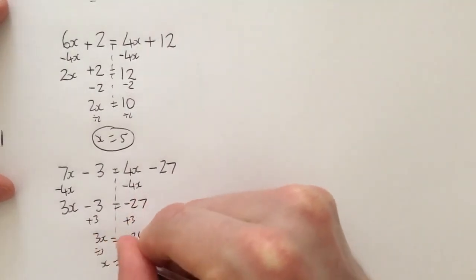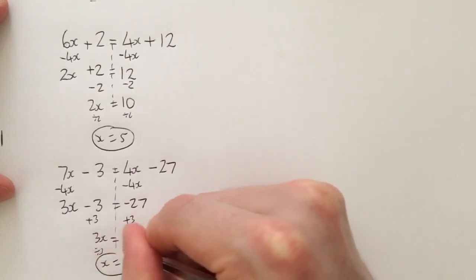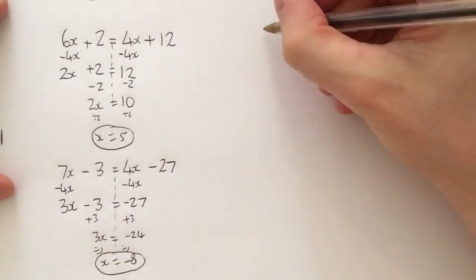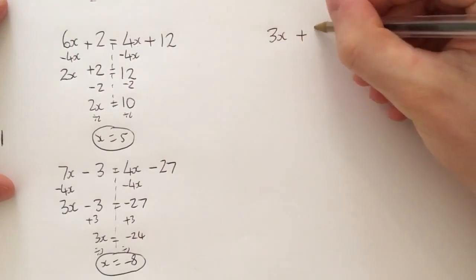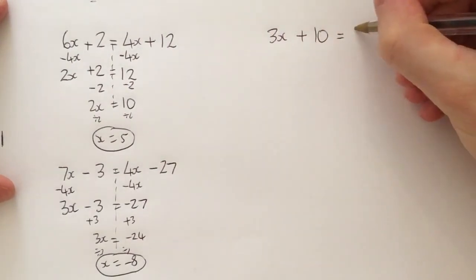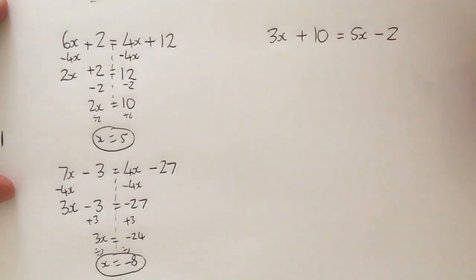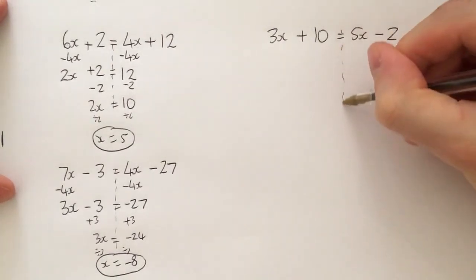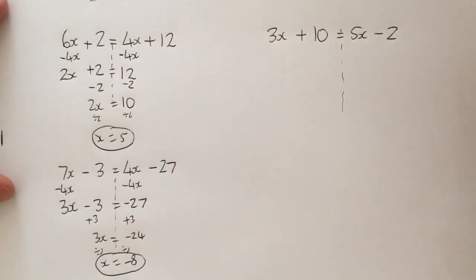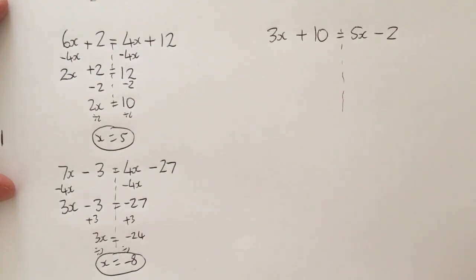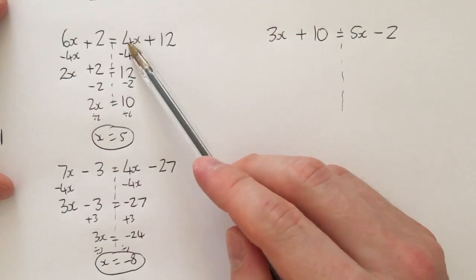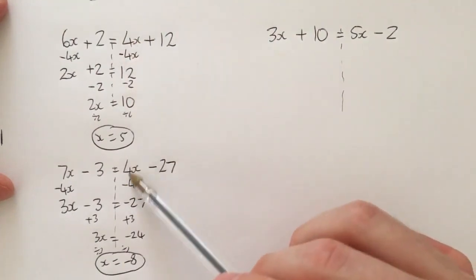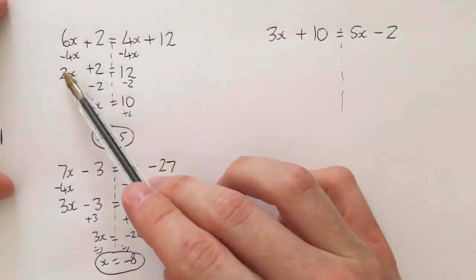What about this one: 3x + 10 = 5x - 2? I want to solve it now. It looks very similar, but stop. I want to get x's on the same side. What we've done previously is that both times we've had to minus whatever this was on the right hand side from the left hand side because it was a smaller coefficient in front of the x.